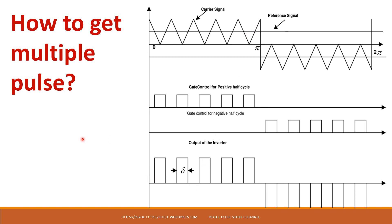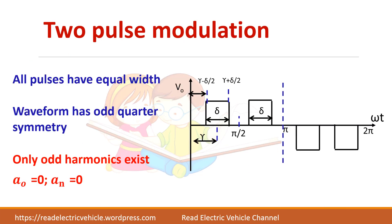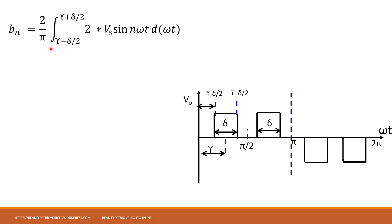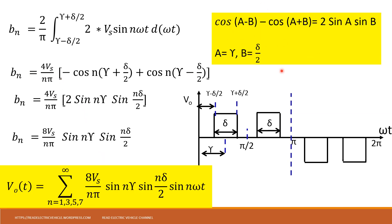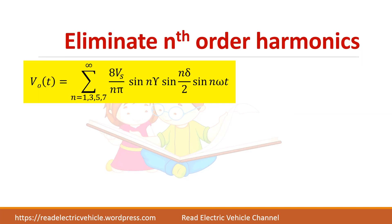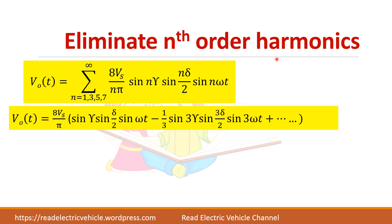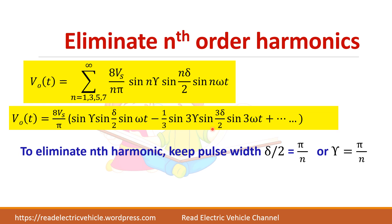Let us analyze two-pulse modulation. The waveform satisfies odd symmetry, so only odd harmonics exist and a₀ and aₙ terms become zero. To find bₙ, the limits are (γ − δ/2) to (γ + δ/2), and since there are two pulses, a factor of 2 is included. Applying the formula and simplifying gives the output voltage expression. To eliminate the nth order harmonic, set either nγ = 180° or sin(nδ/2) = 0, so that the harmonic term vanishes.